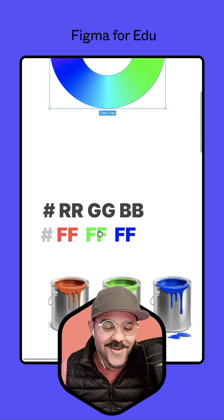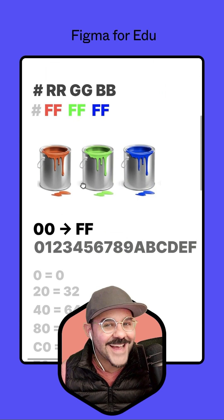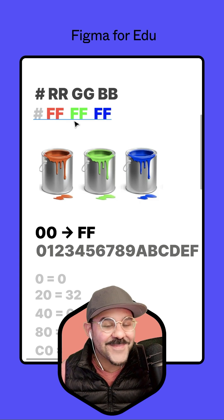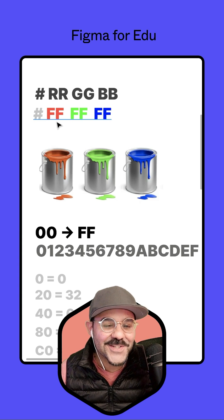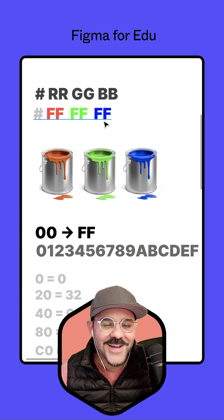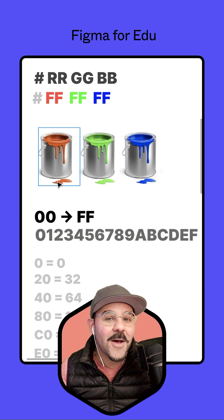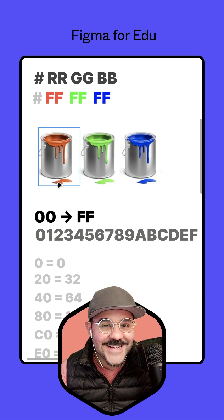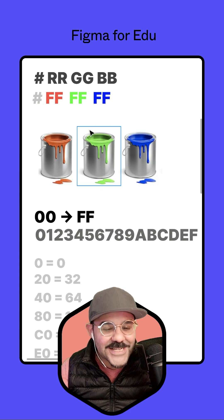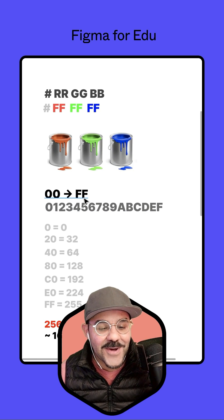Let's talk a little bit about the hex code and break down exactly how those colors work. When you think about that hex code, there are going to be six digits. The first two digits represent the red, the second two digits represent the green, and the third two digits represent the blue. The amount of color in each paint bucket essentially represents each pair of numbers, and they go from zero to FF.